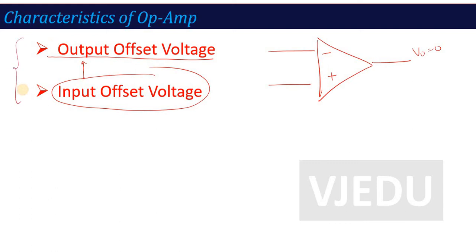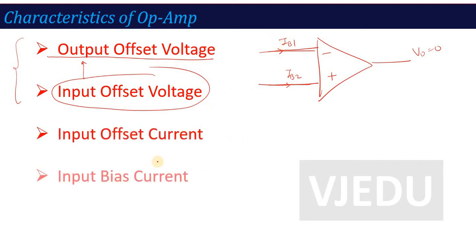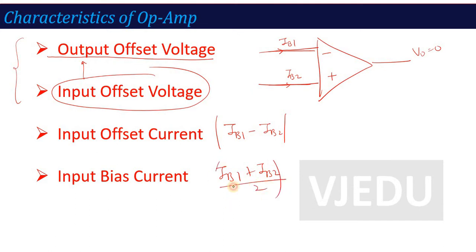Similarly, if you remember, there are two op-amp input terminals. Suppose the currents at these terminals are IB1 and IB2. Based on these two currents, two important characteristics arise. One is called the input offset current, and another is called the input bias current. Input offset current is defined as IB1 minus IB2 — that is, the difference between the two terminal currents. Input bias current is the average of these two values, that is IB1 plus IB2 divided by 2.